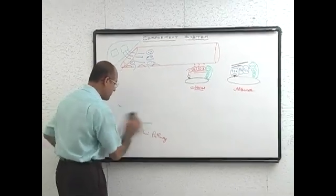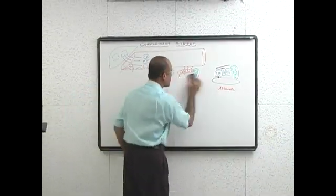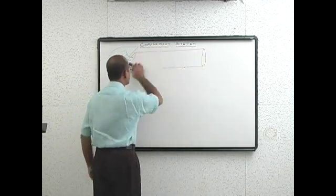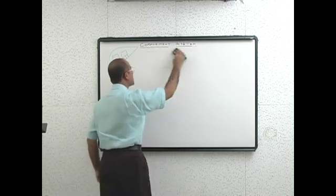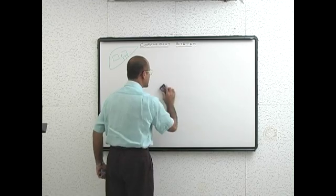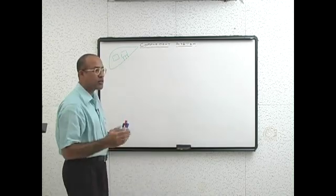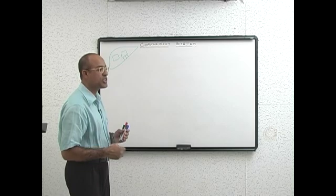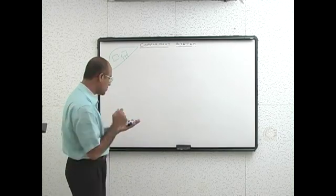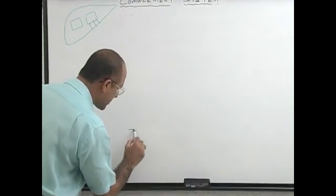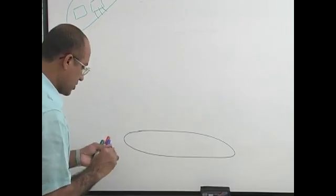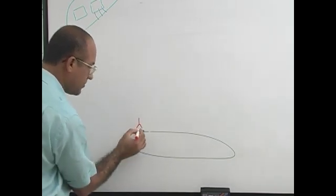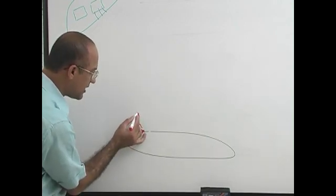Let us make a simple diagram. Bacteria are present in your body and they are damaging the tissue. We take an example of classical pathway activation — this is an antigen, this would be an antibody, and this is the active tail of the antibody.